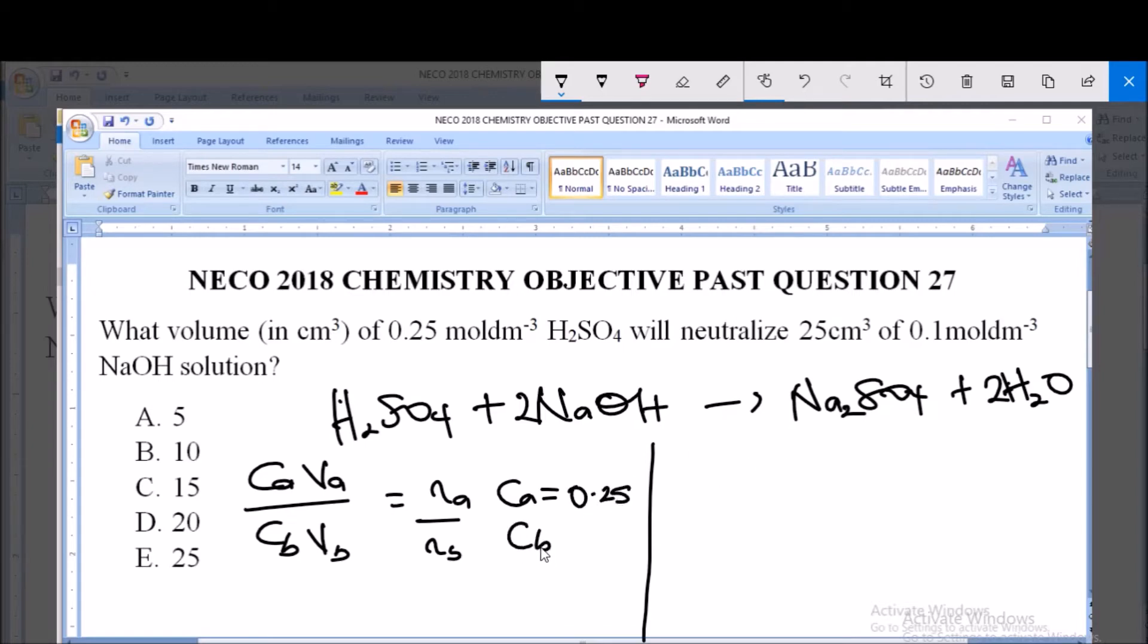CB equals 0.1 mol/dm³. VA, which is the volume of the acid, we don't know. VB, the volume of the base, is 25 cm³. NA, the mole of the acid, is 1, and NB, the mole of the base, is 2. We are looking for the volume of the acid, which is VA.